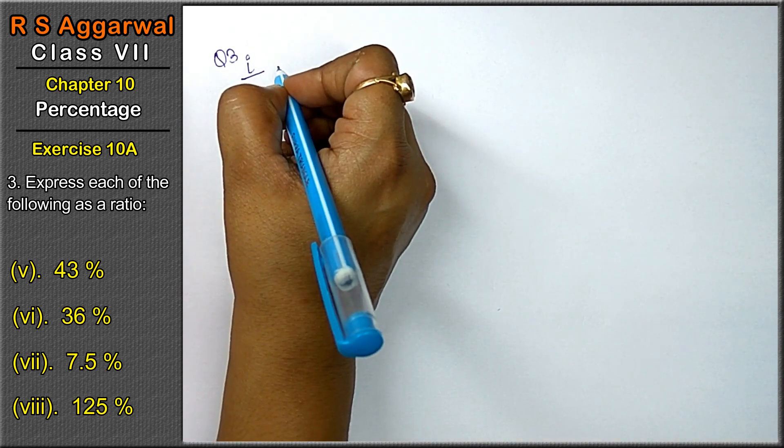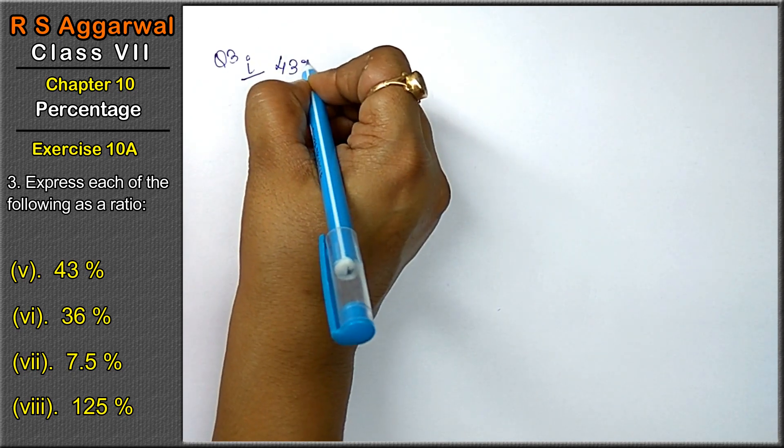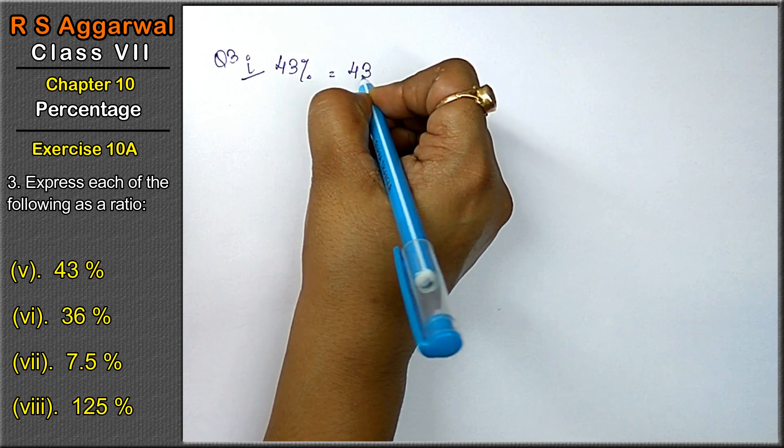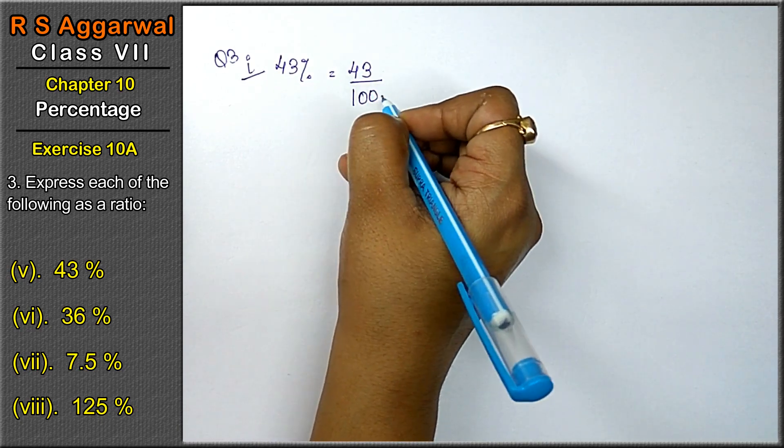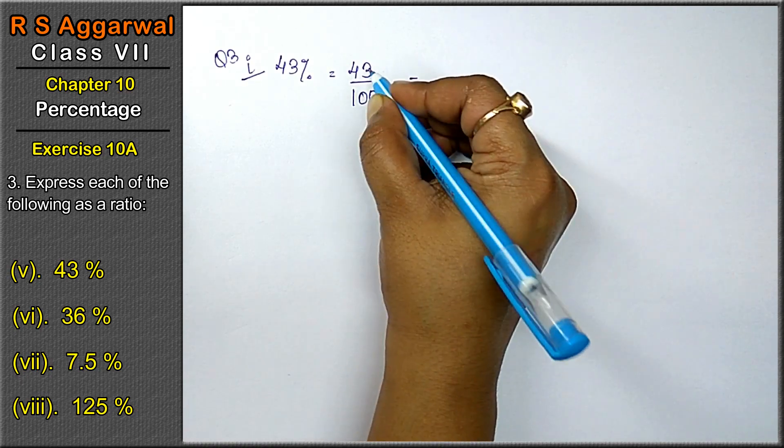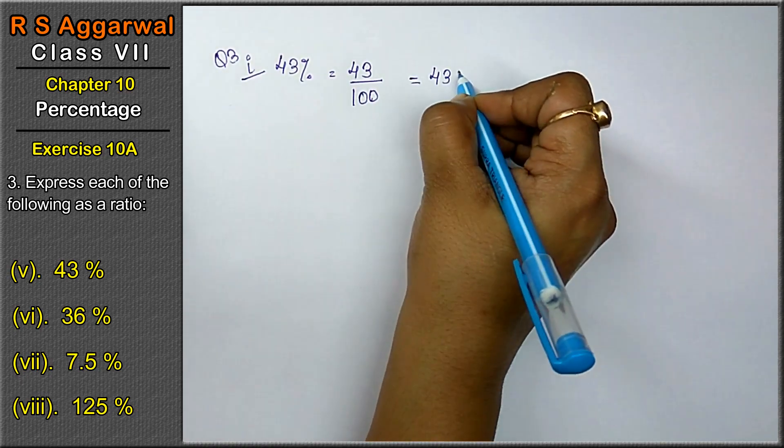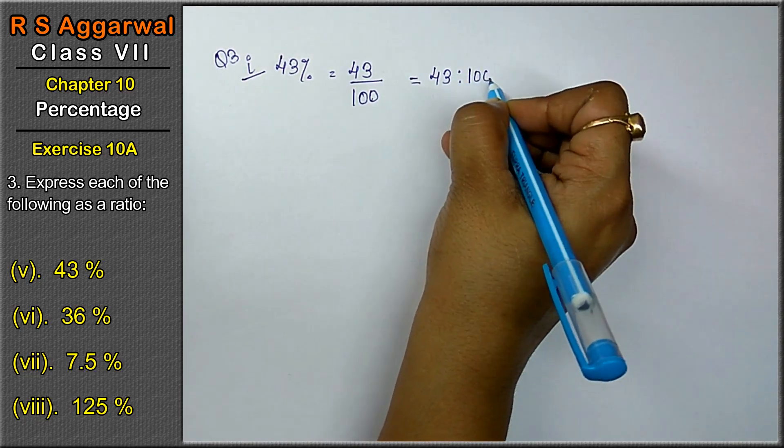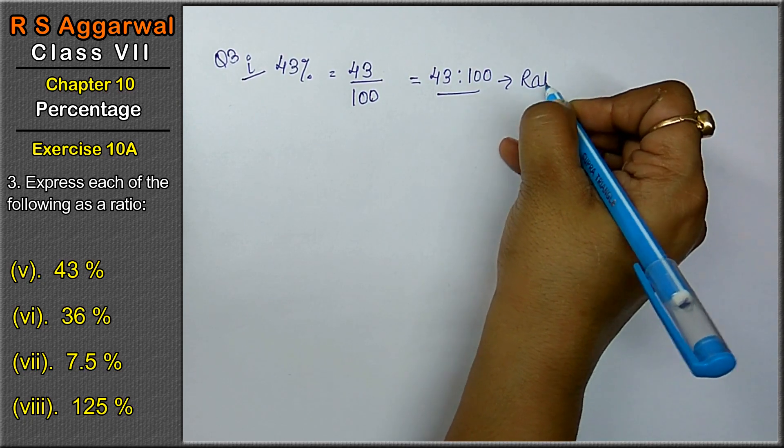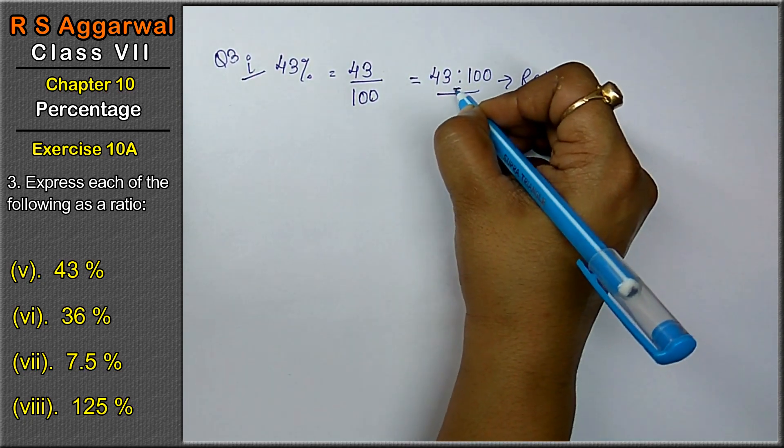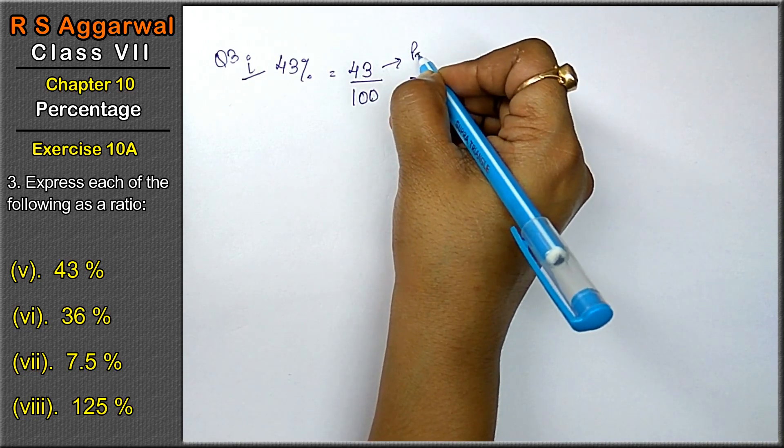We have to convert it in the ratio 43%. I have told you that we have to convert the percentage of the sign upon 100. What we have to write in the ratio or in the fraction. This is called fraction. And we will write 43 is to 100. This is called ratio. Because this is the sign of ratio. And this is called fraction.